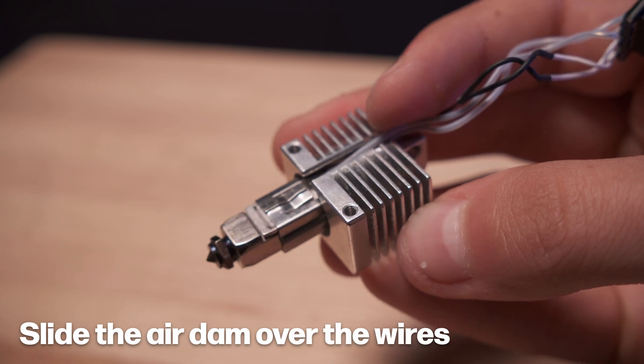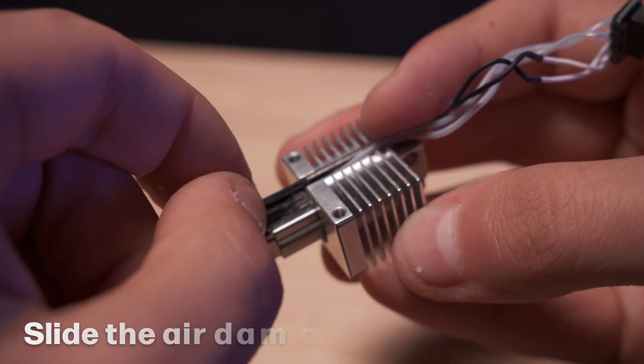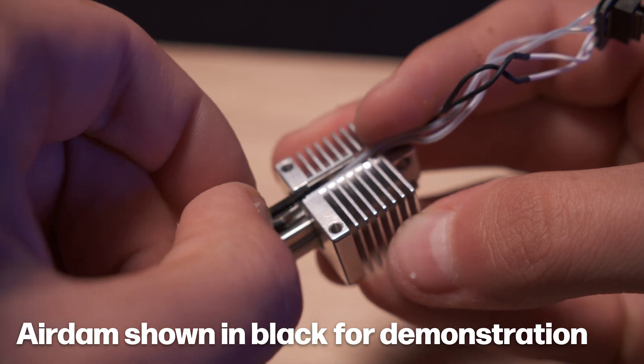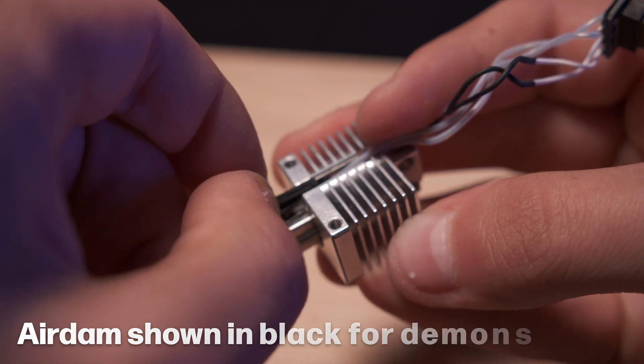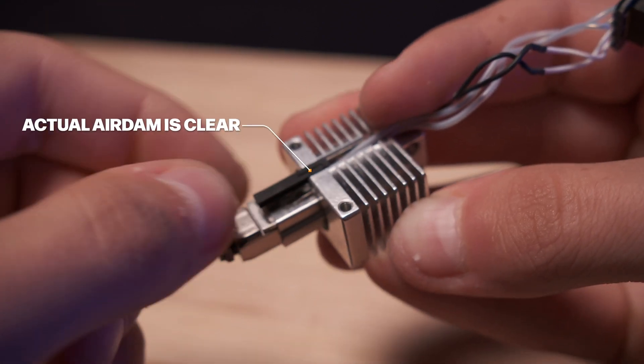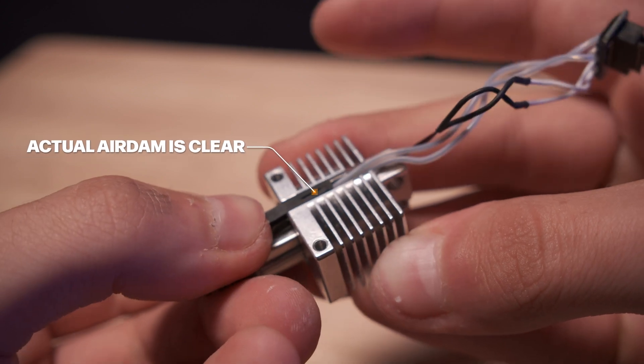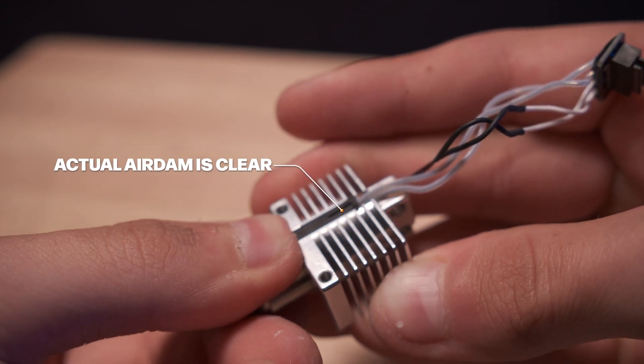Insert the plastic air dam into the slot where the heater and sensor wires are routed through to ensure that they don't come out during printing. Make sure the air dam is pushed all the way up into the heat sink to where its bottom surface is flush with the bottom surface of the heat sink.